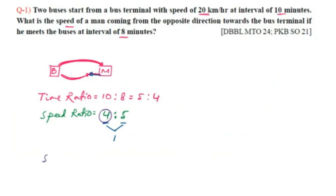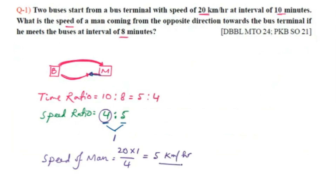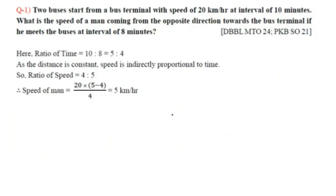The speed of the man can be derived from the ratio. Since the bus speed is 20 km/h and corresponds to 4 units, each unit equals 5 km/h. Therefore, the man's speed is 5 kilometers per hour. That completes the solution for question one.